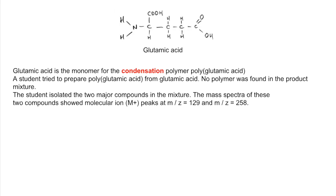So the next question is about glutamic acid and it's a bit trickier. But at the heart of it is the same condensation process. So glutamic acid is the monomer for the condensation polymer polyglutamic acid.